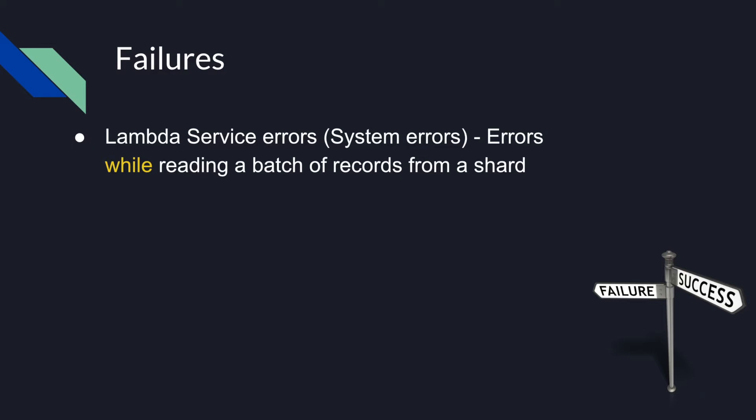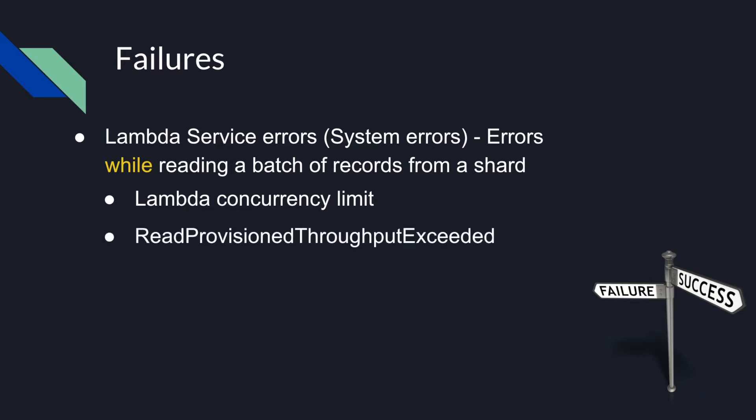Lambda service errors can happen in the following scenarios. The first is Lambda concurrency limit — by default you can only have up to 1000 concurrent Lambda executions in the same region for one account, and if you reach that limit the Lambda execution will be throttled. The second is read provisioned throughput exceeded, which occurs when GetRecords calls are throttled by Kinesis Data Streams over a duration of time.